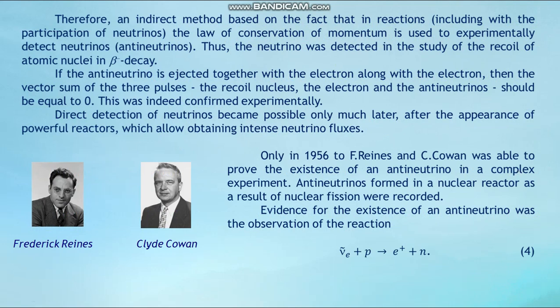Direct detection of neutrinos became possible only much later, after the appearance of powerful reactors which allowed obtaining intense neutrino fluxes. Only in 1956 were Frederick Reines and Clyde Cowan able to prove the existence of anti-neutrinos in a complex experiment. Anti-neutrinos formed in a nuclear reactor as a result of nuclear fission were recorded as evidence for the existence of anti-neutrinos through an observed reaction.